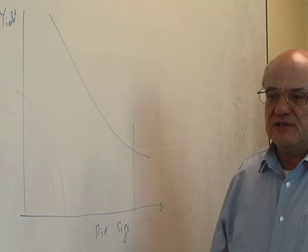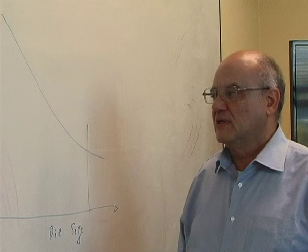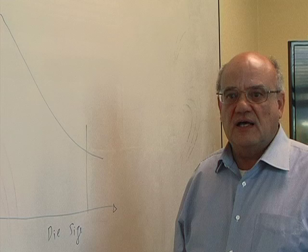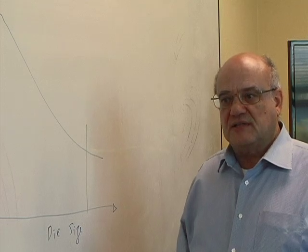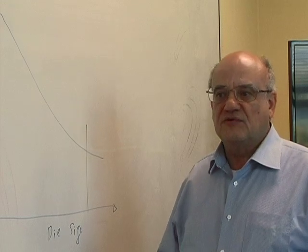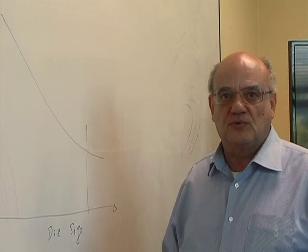For example, in 28 nanometer, if you have a 300 millimeter square die, you will be lucky if you get 40 percent yield, even at a mature process. Imagine that you can take that 300 millimeter square die and break it down to two. All of a sudden your yield has gone up from 40 percent all the way to 70 percent.